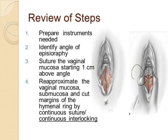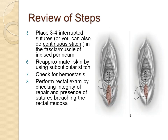A review of the eight steps of second degree episiotomy repair: Step 1, prepare the instruments needed. Step 2, identify the angle of episiotomy. Step 3, suture the vaginal mucosa starting 1 cm above the angle. Step 4, re-approximate the vaginal mucosa, sub-mucosa, and cut margins of the hymenal ring by continuous or continuous interlocking suture. Step 5, place 3 to 4 interrupted sutures or continuous stitches in the fascia or muscle of the incised perineum. Step 6, re-approximate the skin using subcuticular stitch. Step 7, check for hemostasis. Step 8, perform a rectal exam by checking the integrity of the repair and the presence of sutures breaching the rectal mucosa.